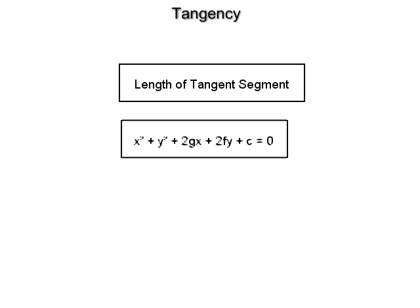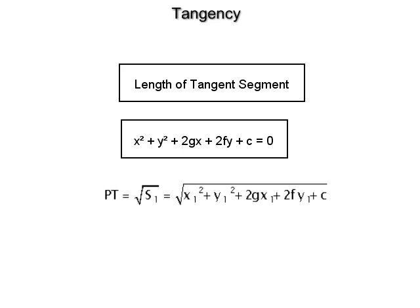Length of tangent segment: the length of the tangent to the circle x² + y² + 2gx + 2fy + c = 0 from the point P(x₁, y₁) is PT = √S₁ = √(x₁² + y₁² + 2gx₁ + 2fy₁ + c).